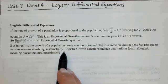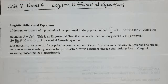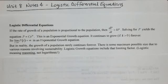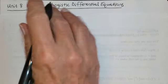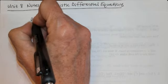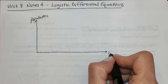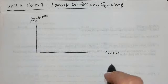In reality, populations rarely continue growing forever — there is always some maximum possible size due to various reasons. That's why we have logistic growth equations: they include a limiting factor within the equation. Let's begin by looking at a graph of what would happen — on the y-axis we have population, and on the x-axis we have time.